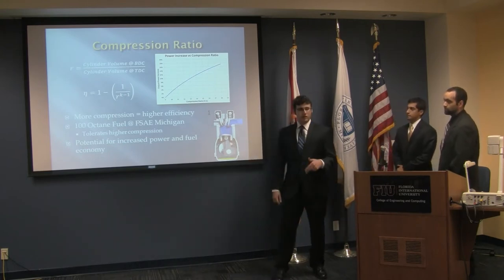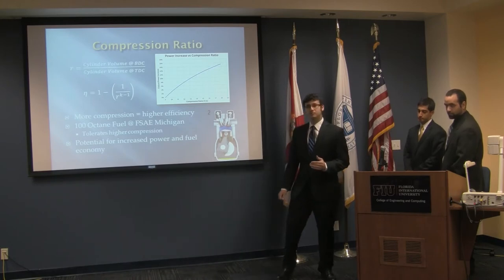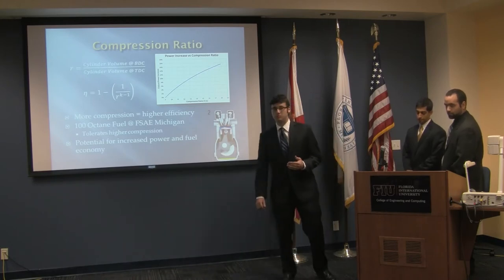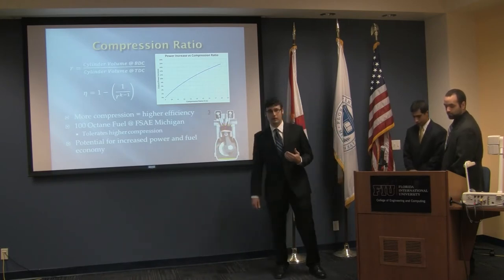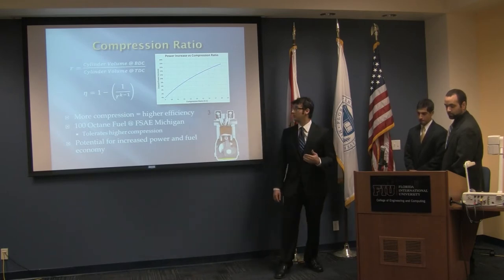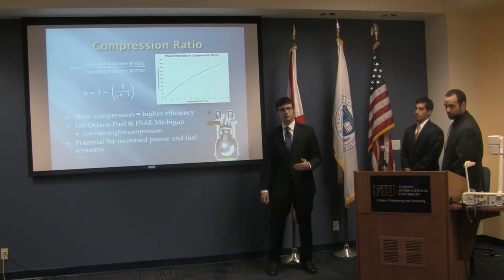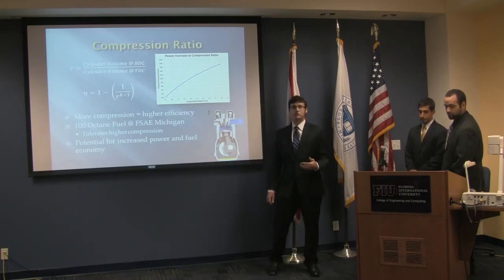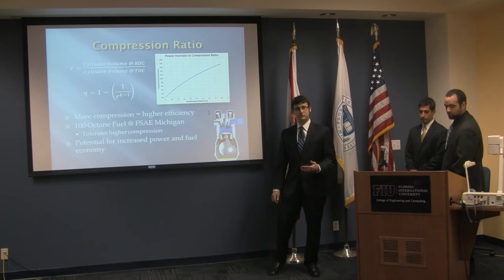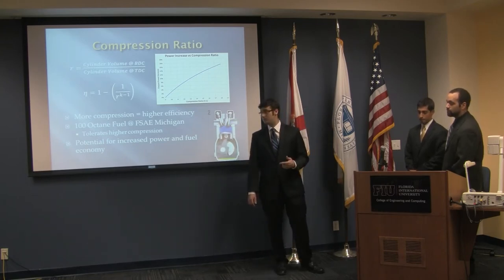Our project is centered around the engine's compression ratio. The compression ratio of an engine is the volume of one of its cylinders at bottom dead center portion of its stroke, divided by the volume of one of the cylinders at top dead center. It is important because the compression ratio of an Otto-cycle engine is fundamentally tied to that engine's thermodynamic efficiency. The higher your compression ratio, the higher your efficiency, the more of your fuel becomes power, and the less of it is turned into waste heat.